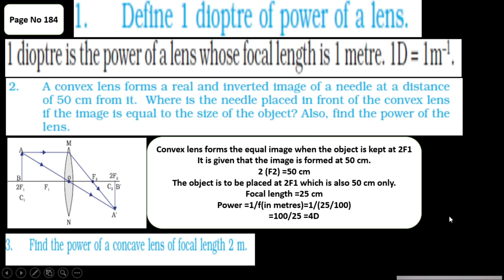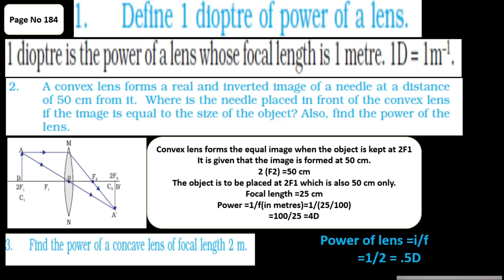Find the power of a concave lens of focal length 2 meters. Power is the reciprocal of focal length expressed in meters. Here the focal length is already given as 2 meters, so the power is 1/2 = 0.5 diopters. Since it is a concave lens, the power should be negative: −0.5 D.